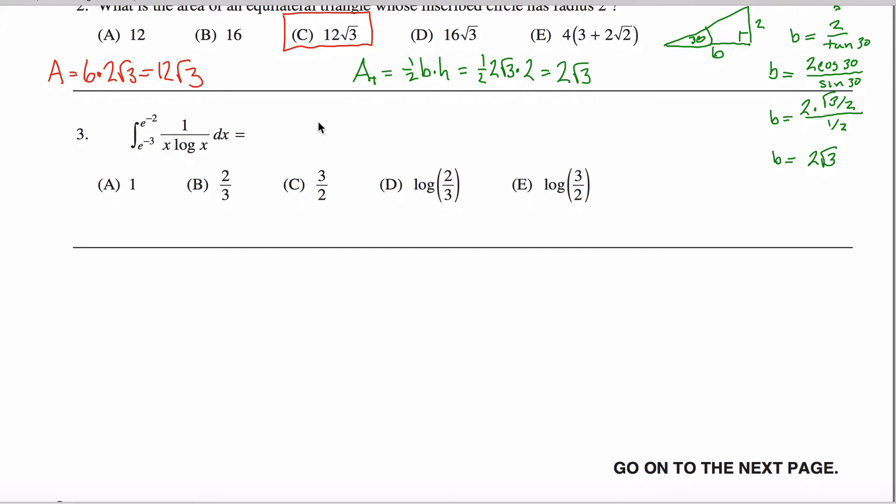So what I'm going to do is I'm going to let u equal, I'm going to write it as ln x instead of log x, I don't know, that's how I memorized them, and then du, the derivative of that will du over dx is one over x, so du is one over x dx.